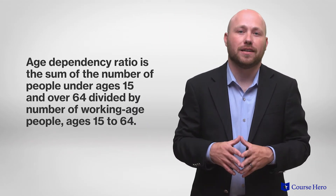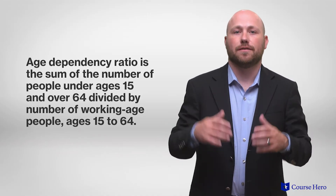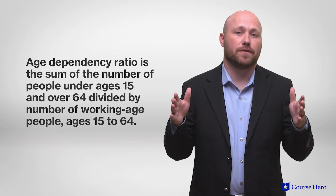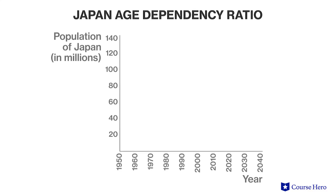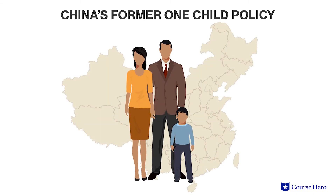These countries are also experiencing an increasing age dependency ratio, which the United Nations defines as the sum of people under age 15 and over 64 divided by the number of working-age people, ages 15 to 64. This is important to predict the economic futures of countries that may not be able to fill the jobs needed. In Japan, the age dependency ratio is 64%, meaning for every three workers there are two dependents. In China, because of the former one-child policy, this problem will become particularly acute in the decades to come, as China's population did not continue to grow.